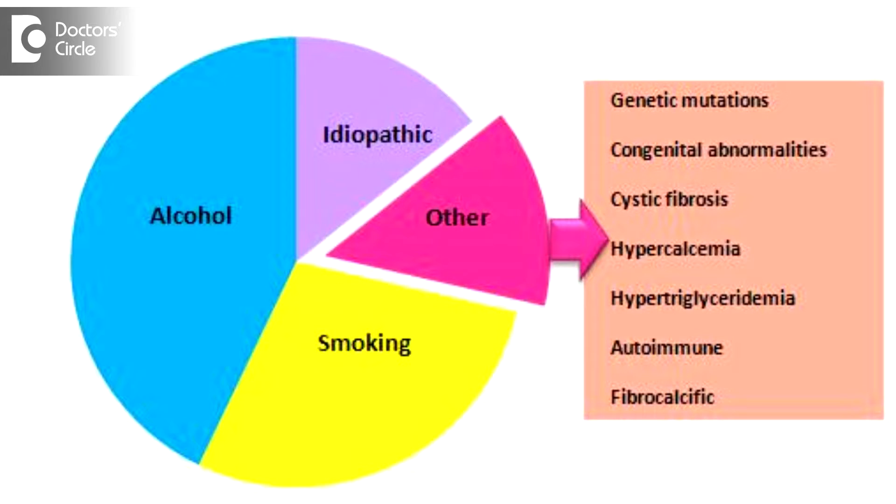What happens in pancreatitis is there is some kind of injury to the pancreas for different reasons. It could be an obstructive lesion, a stone in the gallbladder injuring the pancreas, a viral infection, or congenital reasons. The pancreatic secretions rupture and come out into the abdominal wall. The pancreatic juice, which gets activated instead of digesting the food, starts digesting the normal organs in the intestine and abdomen, creating extensive damage.